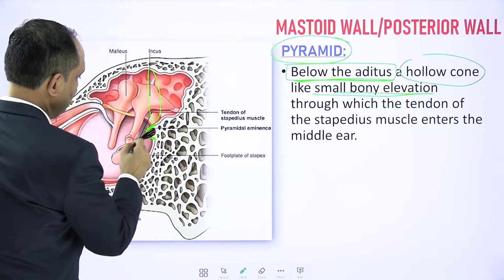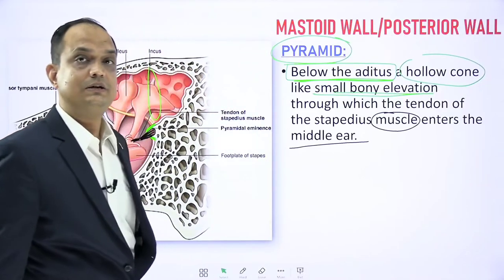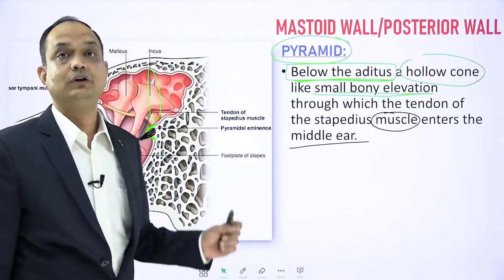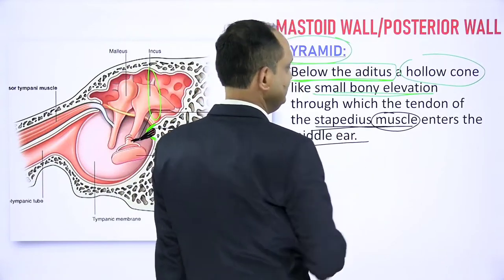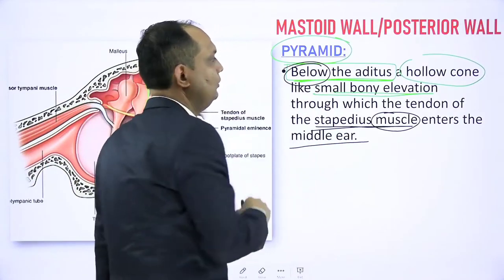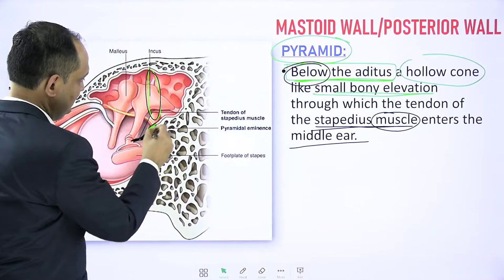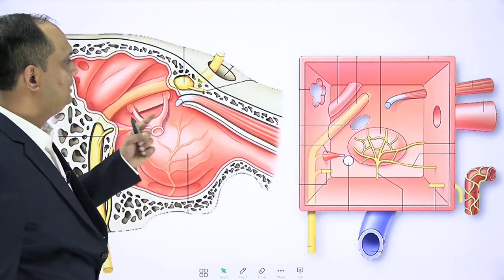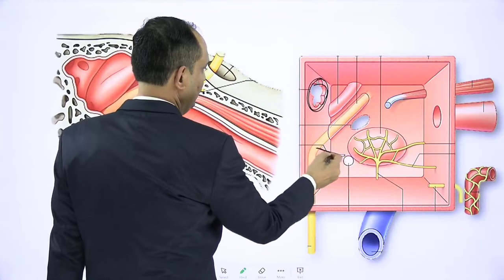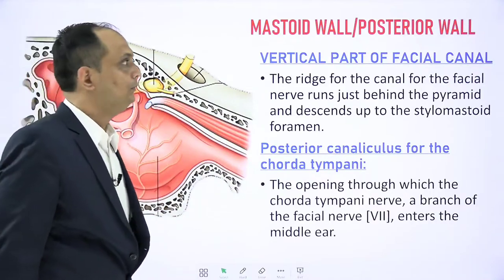The pyramid allows the tendon of the stapedius muscle to emerge. The stapedius muscle comes out through this bony projection and goes to the handle of the stapes bone. So the pyramid is the site of origin of the stapedius muscle, which attaches to the stapes bone. The pyramid lies below the aditus opening. In the diagram, this hollow conical projection below the aditus is the pyramid.